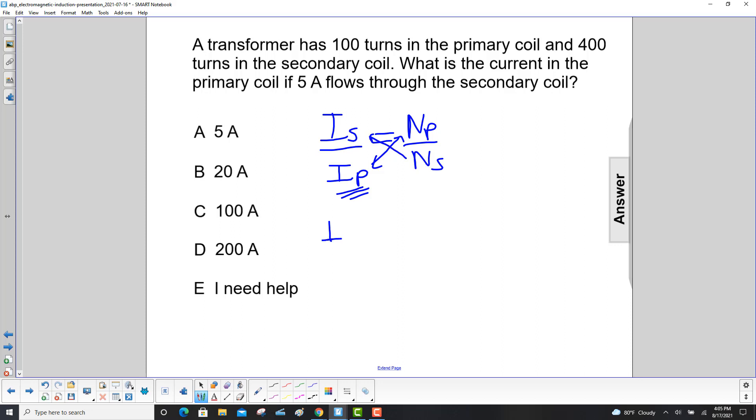So let's see what we have. We have ip is equal to is times ns over np. And you can check that out if you want to do each variable by itself. I like to do it all at once.